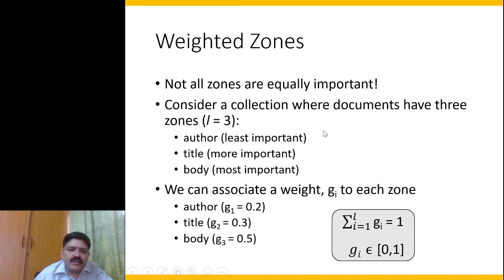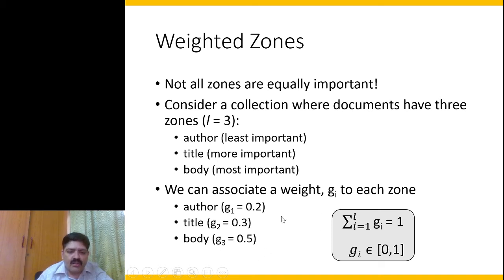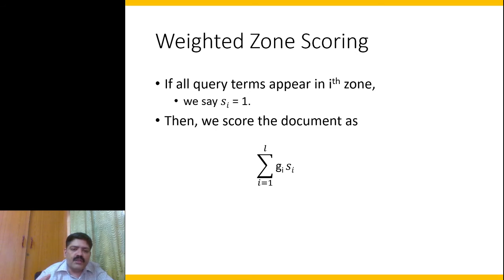Not all zones are equally important, so we assign a weight to each zone. For example, author might be the least important, and body the most important. We distribute a total weight of 1 among all zones — say author is 0.2, title is 0.3, and body is 0.5. With these weights we can do a linear combination — a weighted sum — as our score.